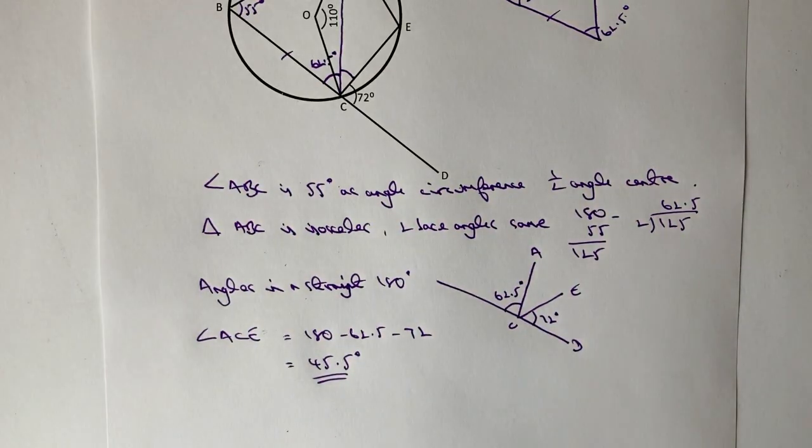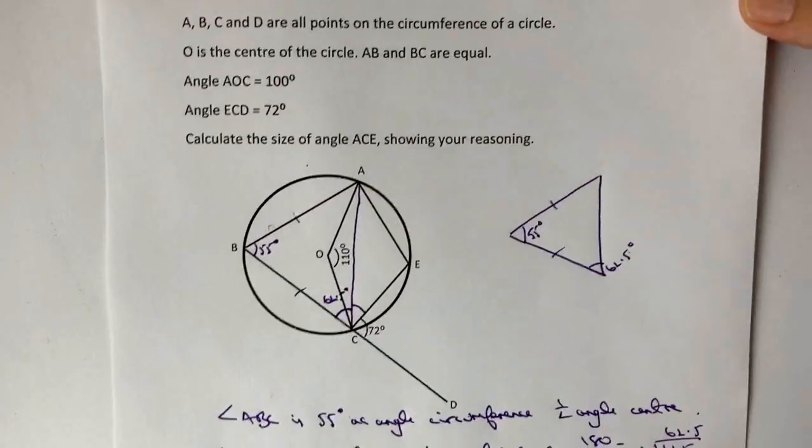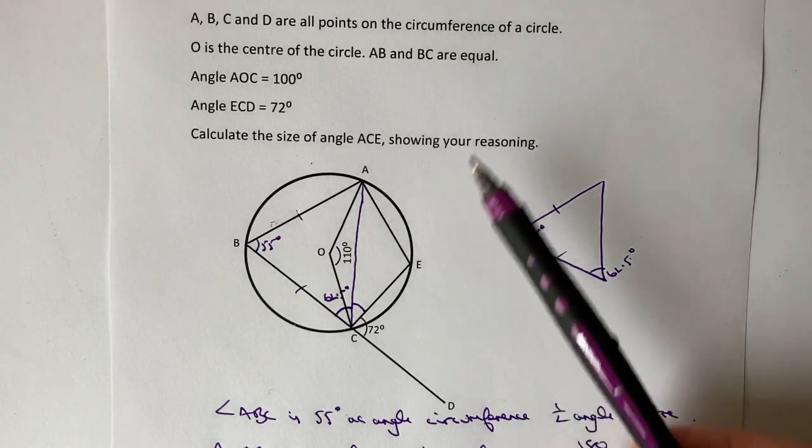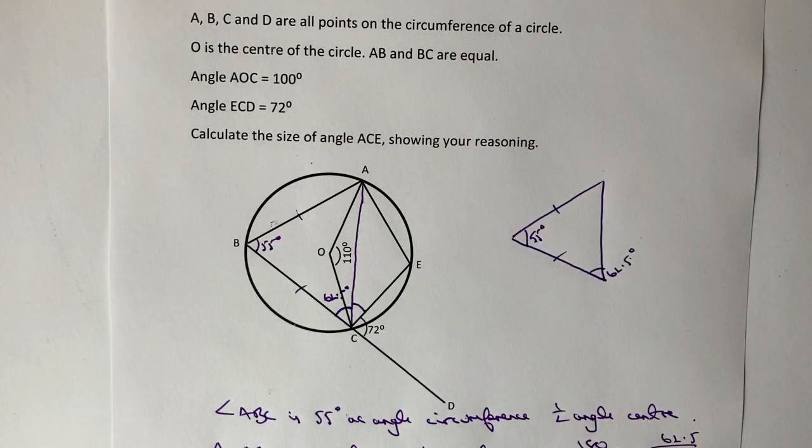And that's the answer to this particular question. So on the face of it, it looks quite tricky. But actually, once you figure out that AB and BC are equal, therefore it must be an isosceles triangle, hopefully it should become a little bit clearer.